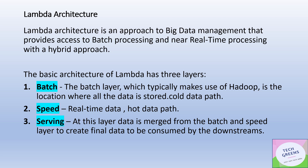Lambda architecture uses a hybrid approach and has three layers. The first is the batch layer — the underlying technology typically used here is Hadoop, which is the de facto technology. The batch layer is the location where all data is stored — the entire master, historical, or archival records are kept in the batch processing layer. It is also a cold data path because it keeps the archival or slow-moving data, essentially the entire data in the system.